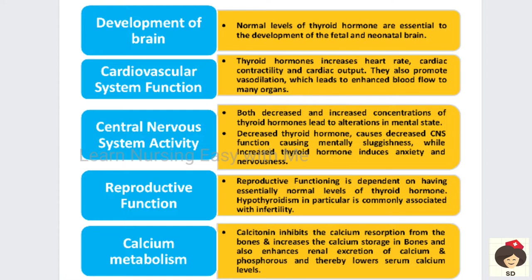Calcitonin, secreted by the thyroid gland, helps in calcium metabolism. It increases calcium storage in the bones and also increases the excretion of calcium from the body through urine, thereby maintaining the calcium level in the blood.